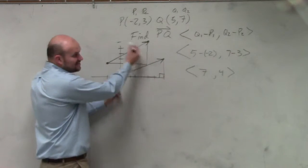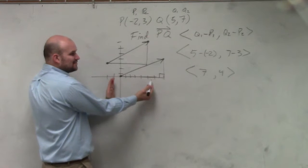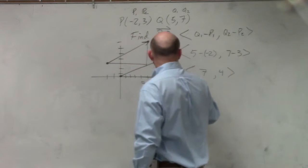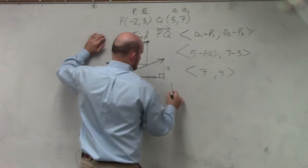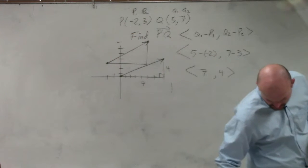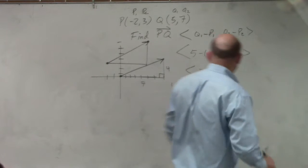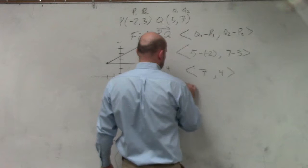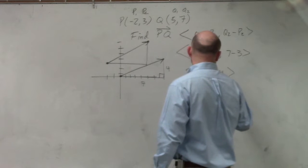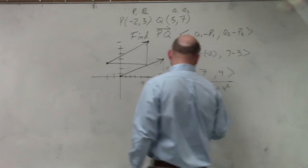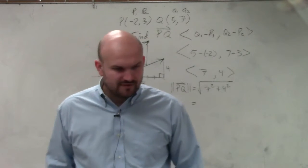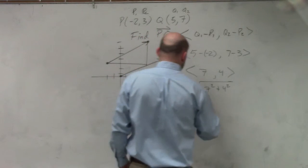But since you wrote it in component form, now my vector is from (0, 0), so I can just say it's 7 and 4. So it's basically going to be my magnitude — which we would write as the magnitude of PQ — is going to equal the square root of 7 squared plus 4 squared. And that's going to be 49 plus 16, so that's going to be the square root of 65.